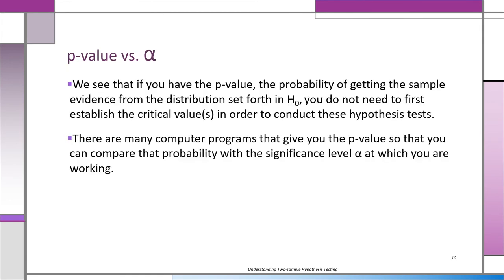The computer simply gives you the p-value: the probability of getting that sample evidence or something more extreme. Then all you have to do is compare it with the alpha. If you look at the p-value in a printout, you'll see it in Excel and other computer programs.